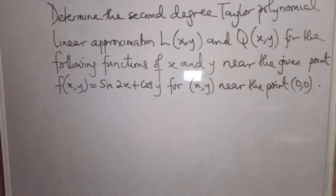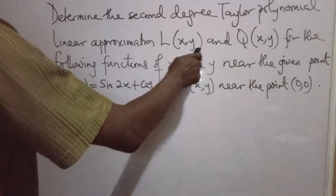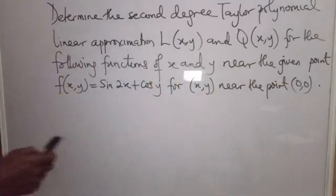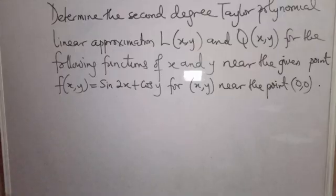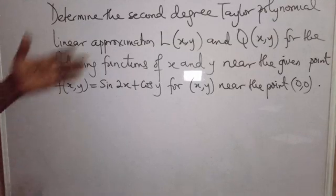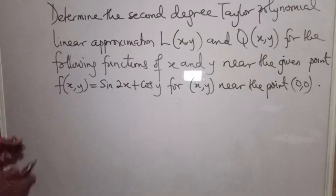Two things are expected here: we need to approximate the given function with respect to L(x, y), that is the linear approximation, and the other is a second degree approximation. For the linear approximation you are looking for a first degree approximation, while for the second one it is a second degree approximation. So, how do we go about this? Let's start.